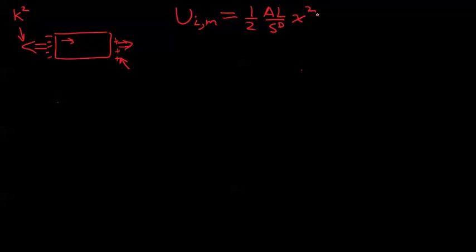So this multiplied by the strain squared. Now the converted electrical energy is equal to one-half εˣ times AL times the electric field squared.